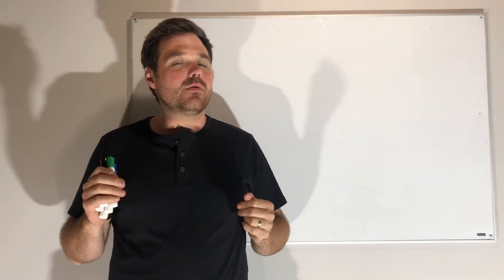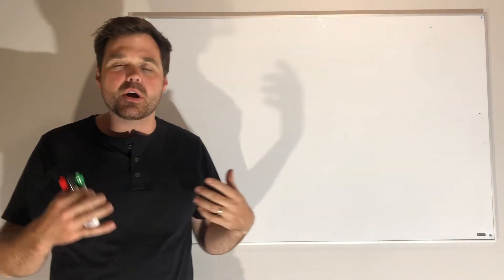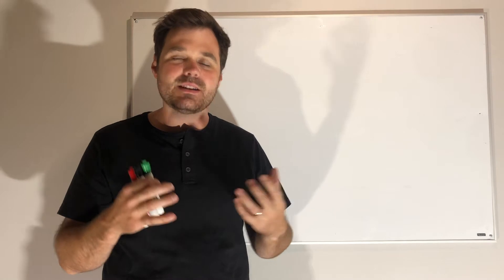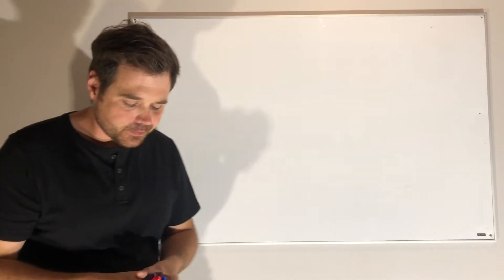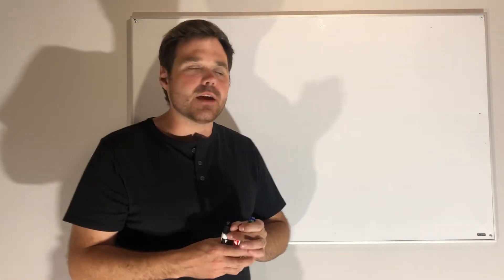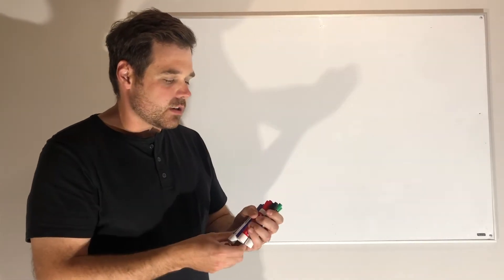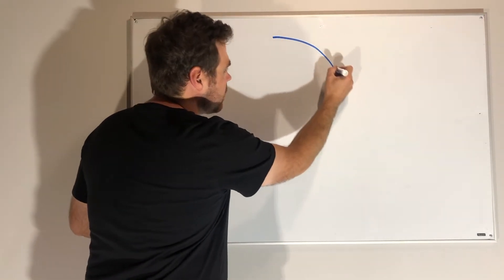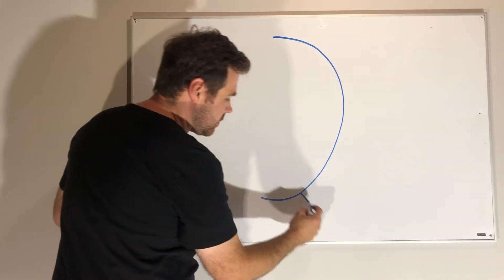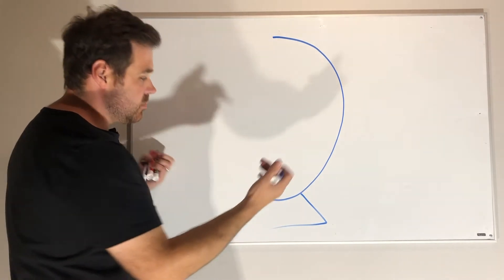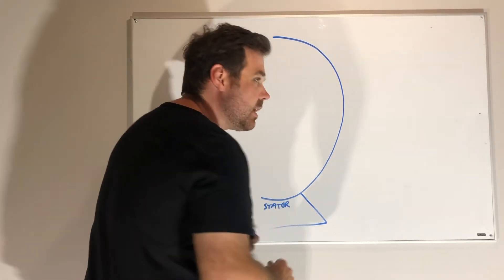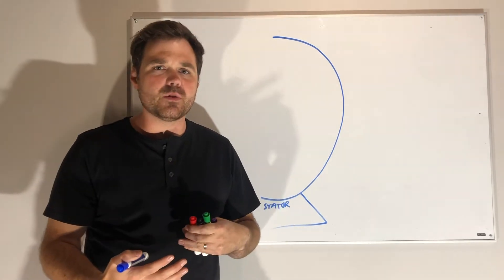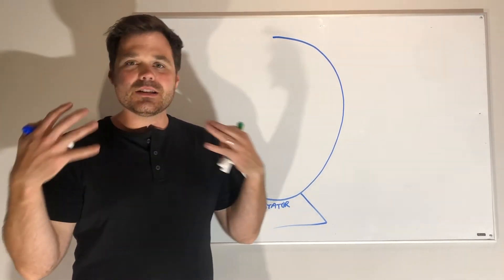I want to talk about how an induction motor actually generates torque, just using the magnetic field between the stator and the rotor. We're going to use a lot of our left-hand rules. I want to think about a motor and the way it's constructed, so we're going to do a cross-section. I have my motor with its base, and this would be my stator — it's going to generate a rotating magnetic field, which we'll probably talk about in a different video.